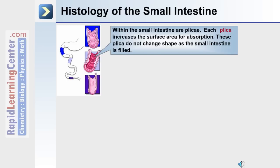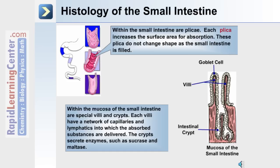Within the small intestine are plicae. Each plicae increases the surface area for absorption in the small intestine. These plicae do not change shape as the small intestine is filled, unlike those of the stomach. Within the mucosa of the small intestine are special villi and crypts. Each villus has a network of capillaries and lymphatics into which the absorbed substances are delivered.